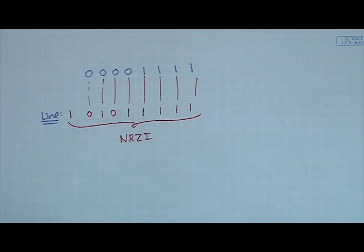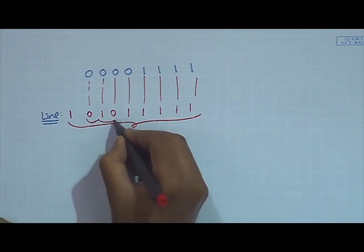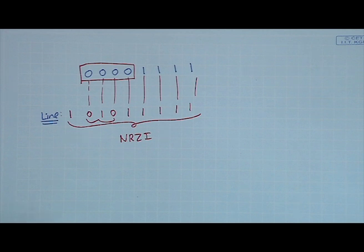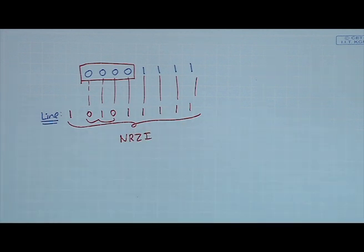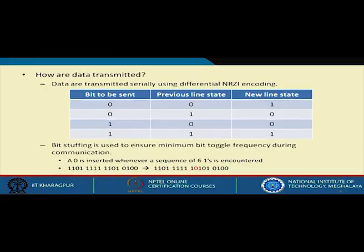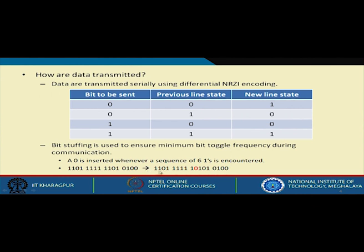NRZI encoding has good properties — it always injects some transitions on the line. Even if your input is a long stream of zeros, there will still be transitions on the line. Transitions are always good because the receiver can synchronize itself with the transitions. It is always desirable in a serial communication link to have sufficient number of transitions on the line.